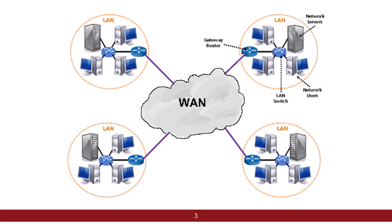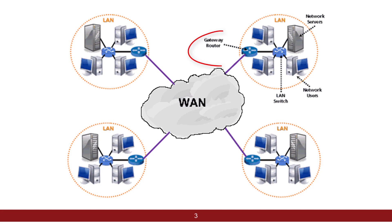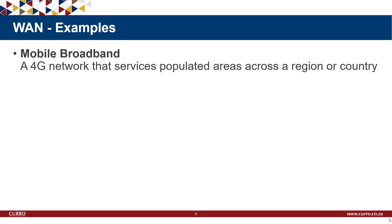If we look at the diagram, we have a LAN where computers and servers are connected via a switch. A gateway router connects one network to another. Examples of WANs include mobile networks — a 4G or 3G data network providing services across a region or country. With your cell phone you are connected to a mobile network, and you can travel across countries; when you go onto a different network they call it roaming, but you can still connect and make calls or use the internet.